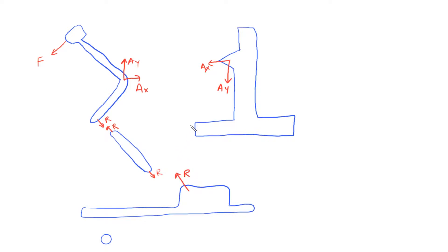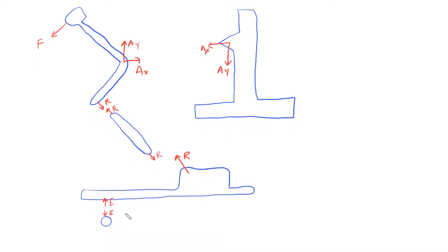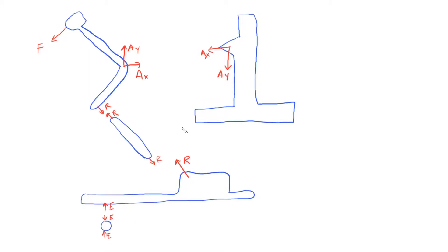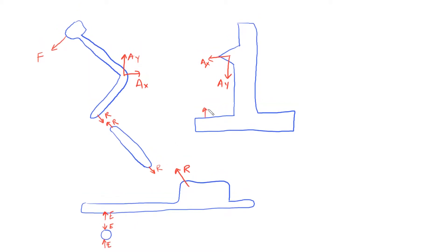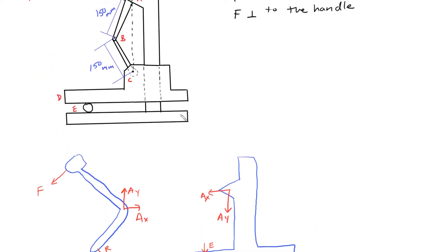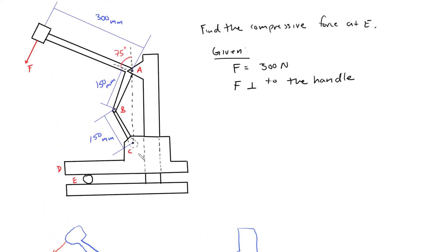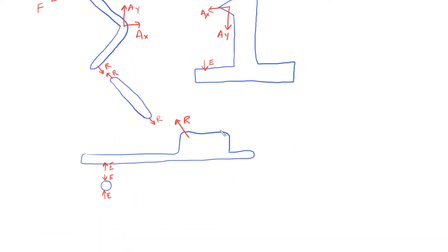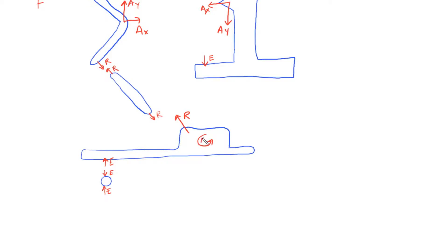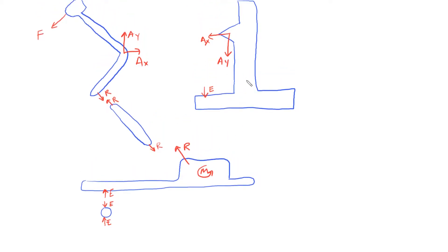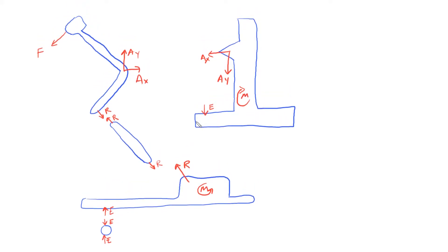We know that there's a compressive force being applied here, so this is going to be E in one direction and E that way. Then there must be a reaction force based on the other part of the machine — that will be E on this machine, pointing downward. This portion of the machine cannot rotate about this bar, so there's a moment being applied here, and by Newton's third law, a moment pointing in the opposite direction. That should be M, and that's everything we need to solve this problem.